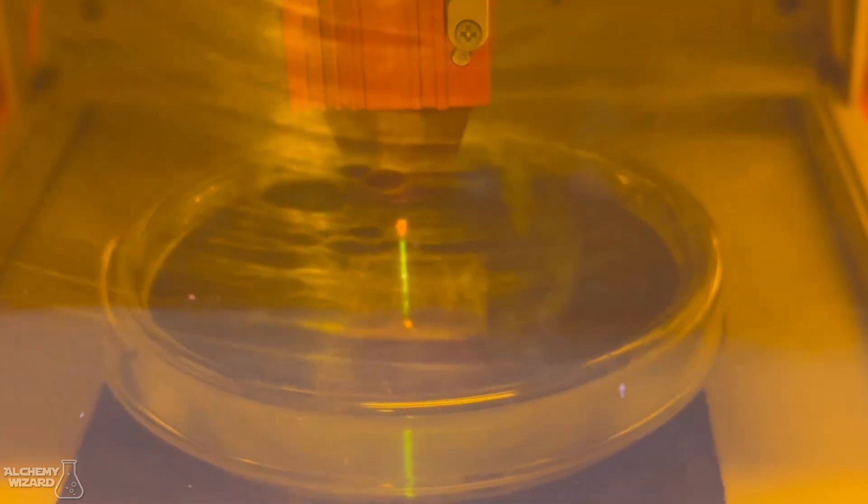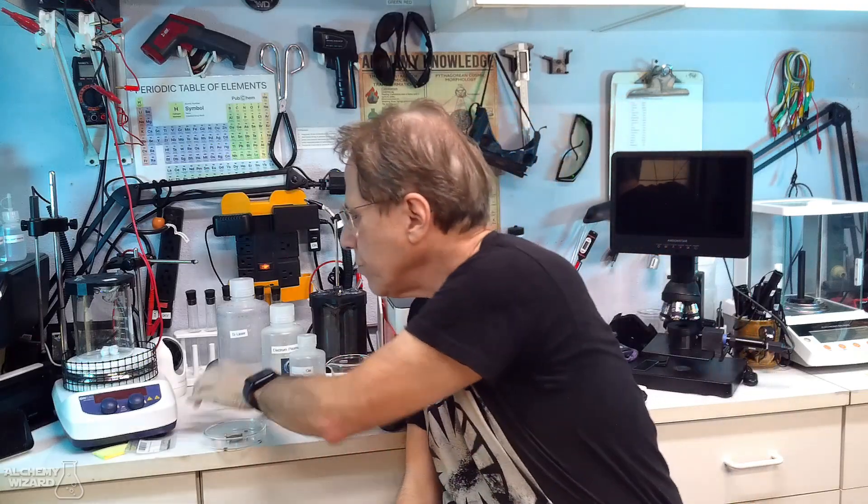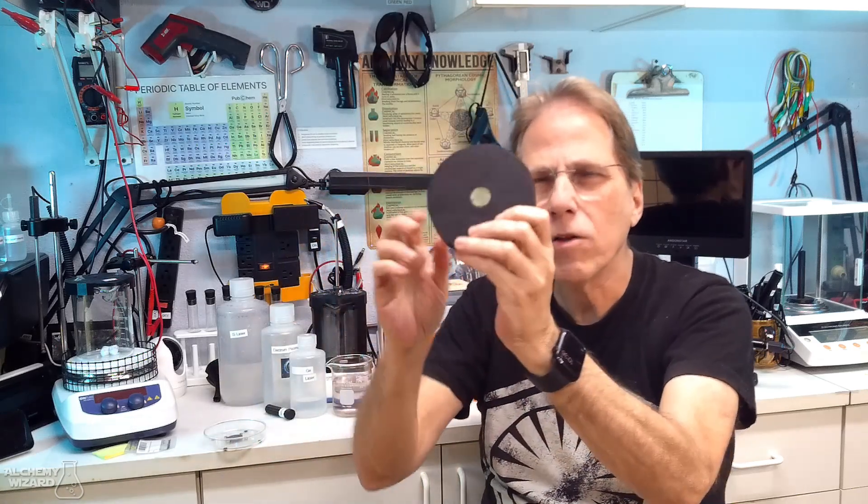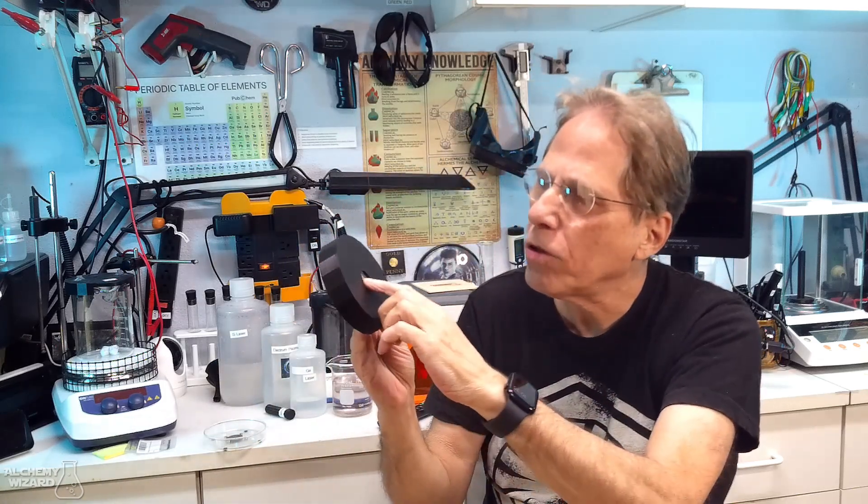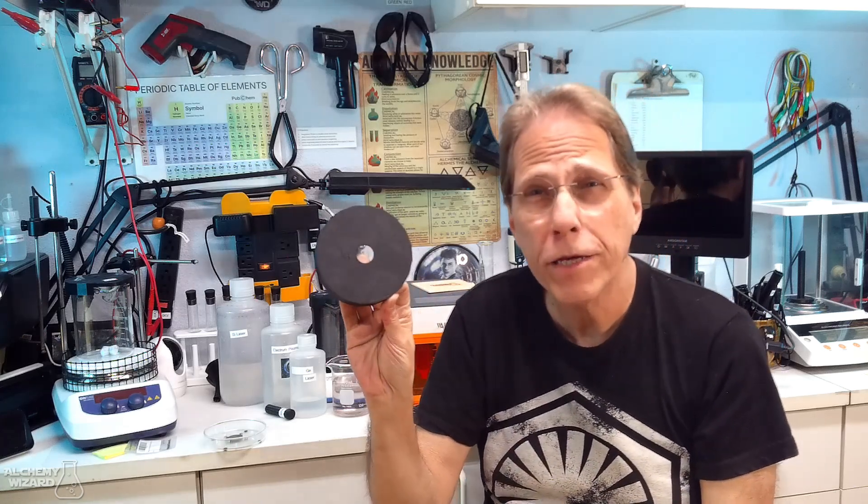It also helps us with the laser too to a certain extent, and I'll talk about that in a minute. And what you do is you take the petri dish cover and you put it in here like this. It has a little hole on the top and the little hole is to allow the laser to go through.